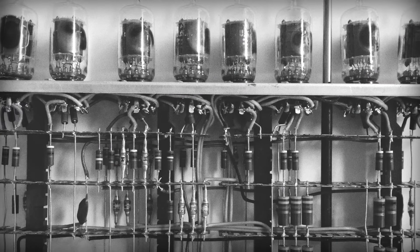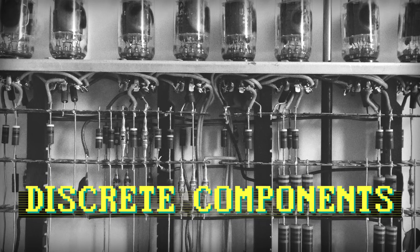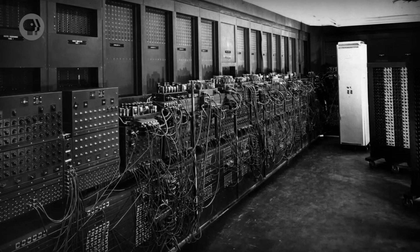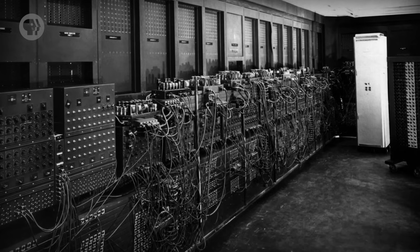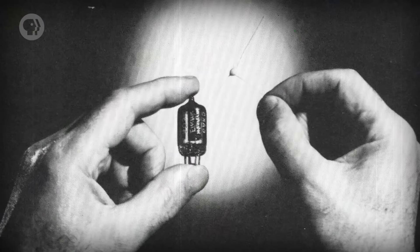To appreciate computing hardware's explosive growth in power and sophistication, we need to go back to the birth of electronic computing. From roughly the 1940s through the mid-1960s, every computer was built from individual parts called discrete components, which were all wired together. For example, the ENIAC consisted of more than 17,000 vacuum tubes, 70,000 resistors, 10,000 capacitors, and 7,000 diodes, all of which required 5 million hand-soldered connections. Adding more components to increase performance meant more connections, more wires, and just more complexity – what was dubbed the tyranny of numbers.